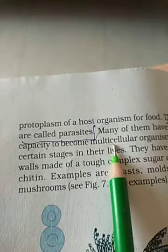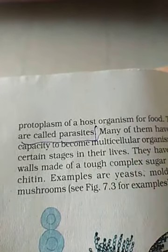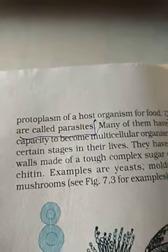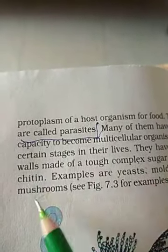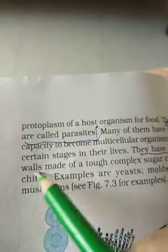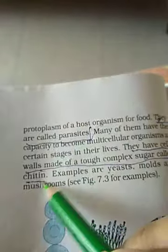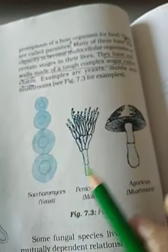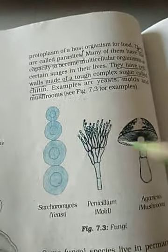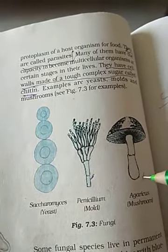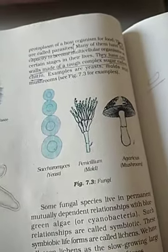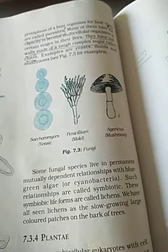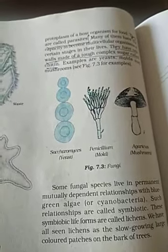Many of them have the capacity to become multicellular organisms at certain stages in their life. If they are unicellular, they become multicellular after a time. Some of them are already multicellular. They have cell walls made up of a tough complex sugar called chitin. For example, yeast, molds, and mushrooms. Yeast is used to produce penicillin.